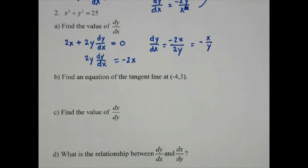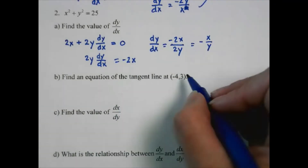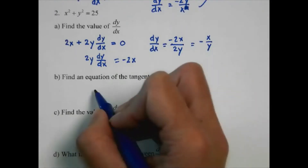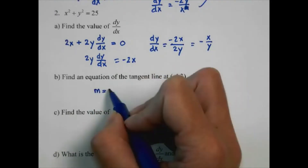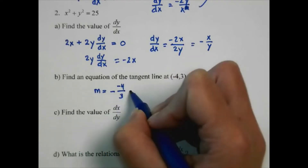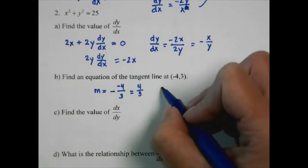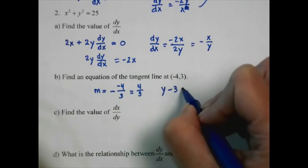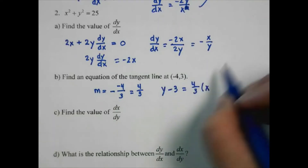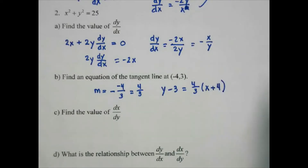We're going to write the equation of a tangent line. We have our point, and the slope we're going to get from this — so we're going to have negative 4 over 3. Then we're going to write the equation: y minus 3 equals 4 thirds times x plus 4.